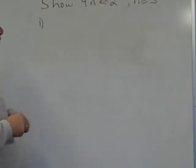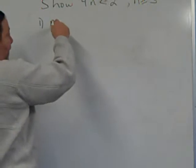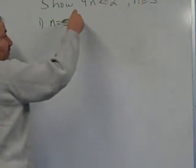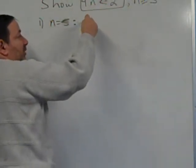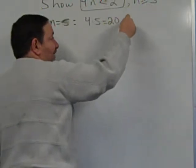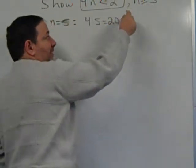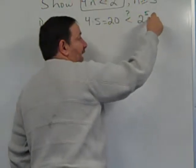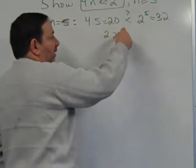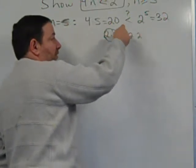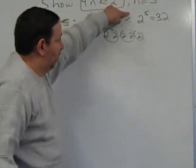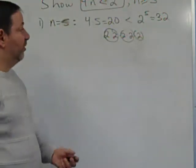The first step is we want to show that it's true for n equals 5. So n equals 5. We want to show that 4 times 5 is less than 2 to the 5, which I claim is 32. 2 to the 5th just means multiplying 2 by itself 5 times: 4 times 4 is 16, times 2 is 32. So 20 is less than 32.